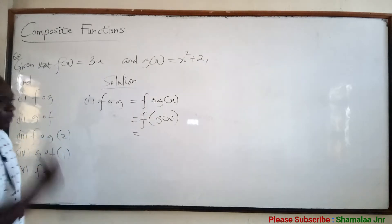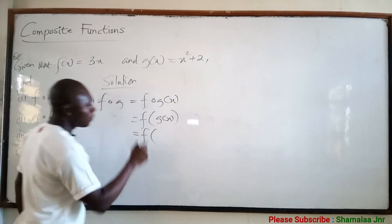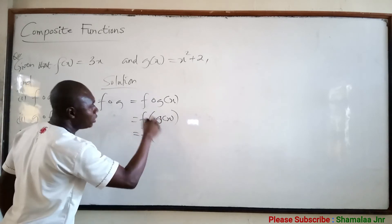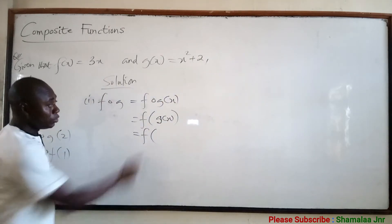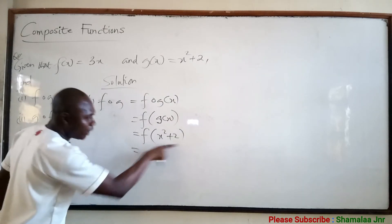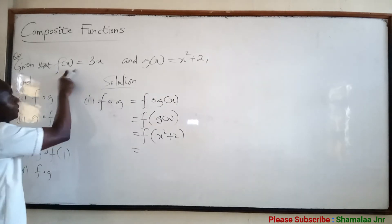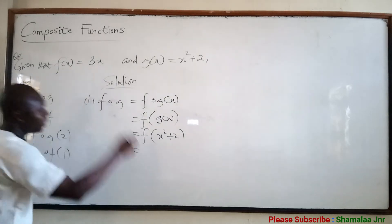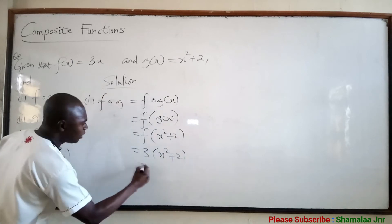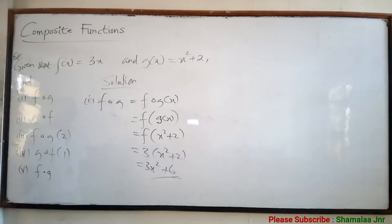This is equal to — what this means is that you should first of all find g of x. So this is going to be f of g(x). Wherever you see x in g(x), you write x squared plus 2. So g(x) = x² + 2. This means f of (x squared plus 2). Since f(x) = 3x, wherever you see x you write x squared plus 2. So this becomes 3 times (x squared plus 2), which equals 3x squared plus 6.